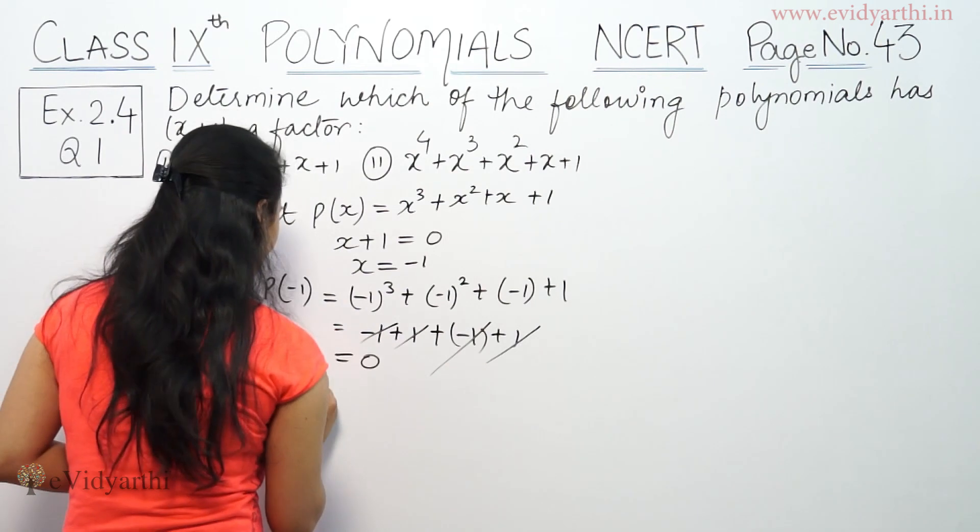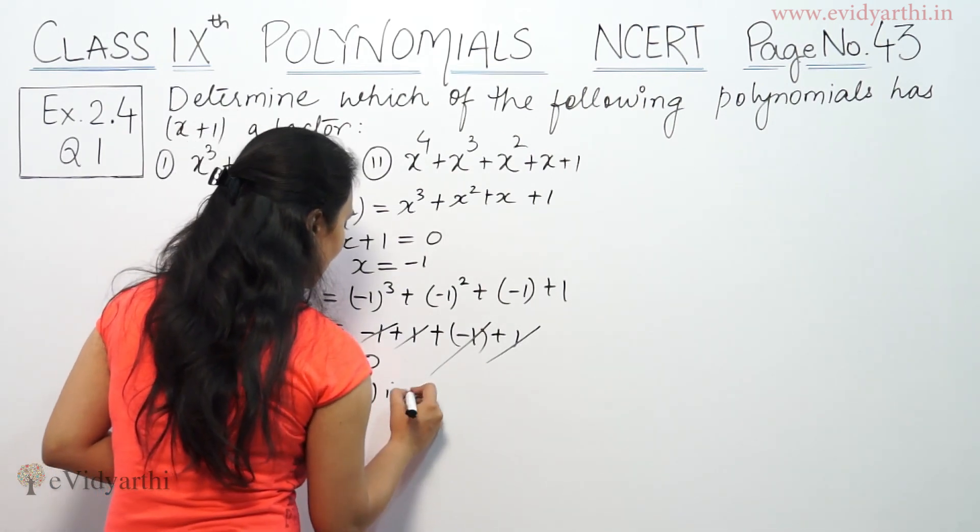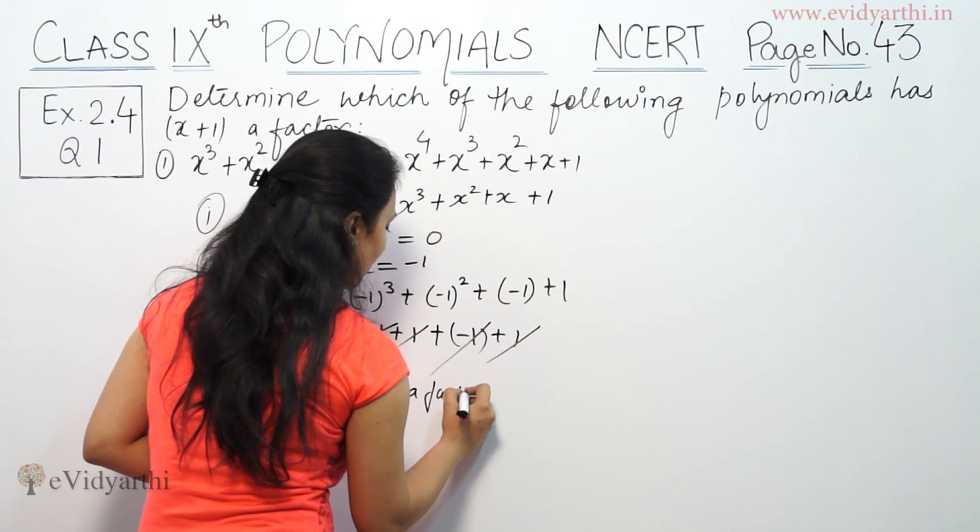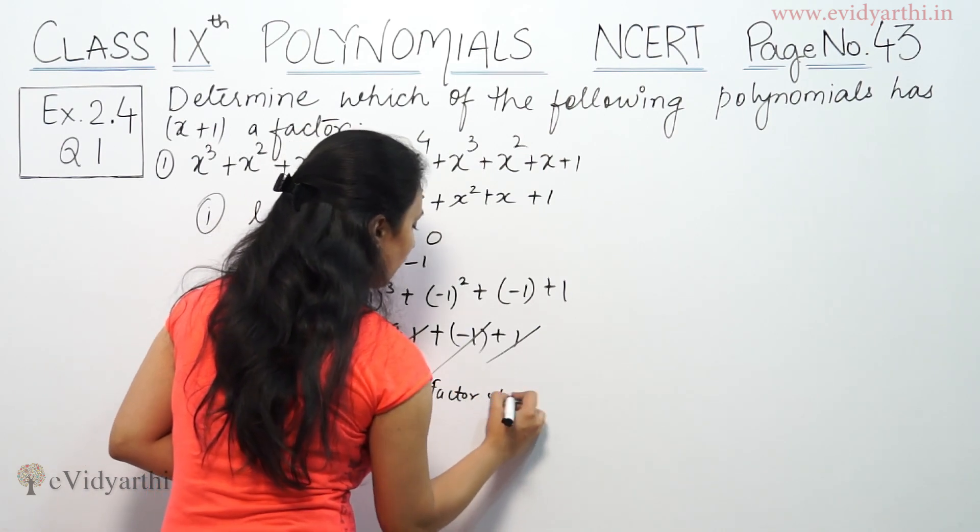Positive negative cancelled, positive negative cancelled, the answer is 0. That means x plus 1 is a factor of this polynomial. Therefore, x plus 1 is a factor of p(x).